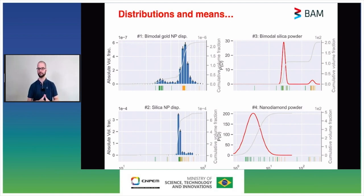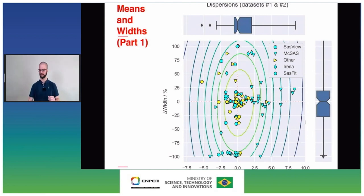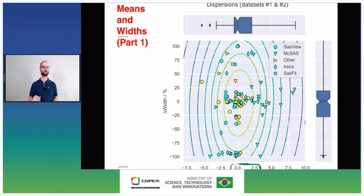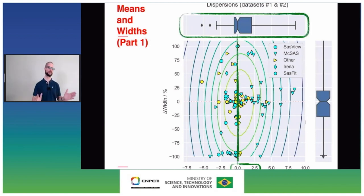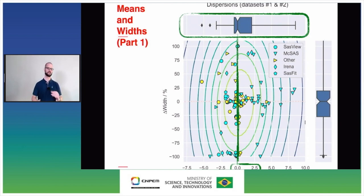Even for the bimodal silica powder the results are not bad. When we get to the very polydispersed nanodiamond sample, the results span a much broader range of sizes than is justified by the sample itself. Looking at this in a two-dimensional way — deviation from median mean on the horizontal axis — 50% of answers were within 2% of the median mean, which is quite good. But the 90% confidence interval, indicated by the whiskers, extends to about 10% of the median mean.